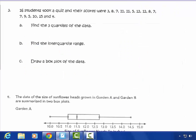Let's go to the next page, page 3. Sixteen students took a quiz and their scores were 3, 8, 7, 11, 11, 5, 12, 12, 8, 7, 7, 9, 5, 10, 15, and 4.